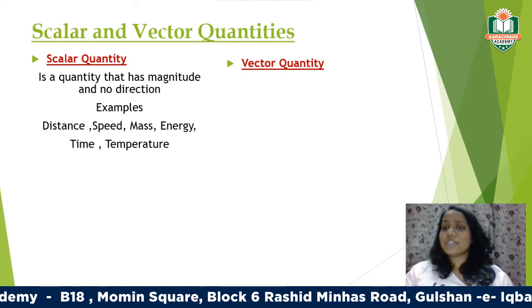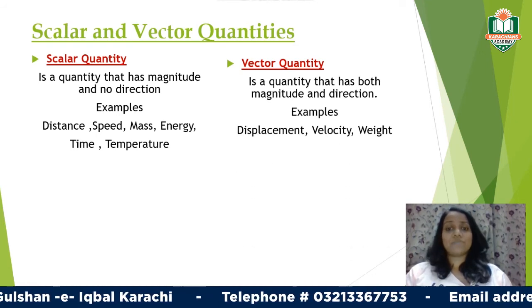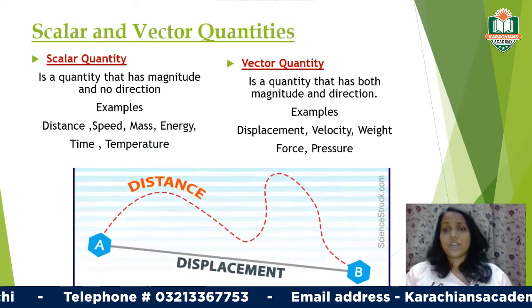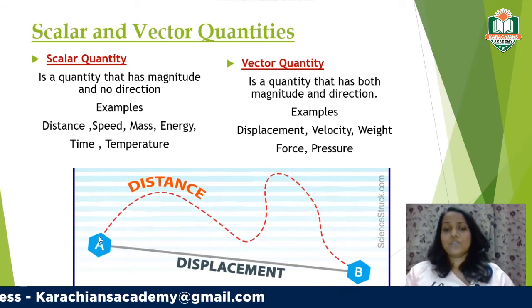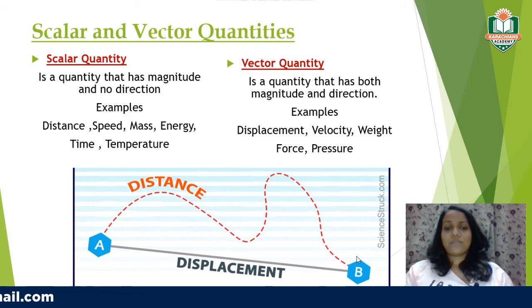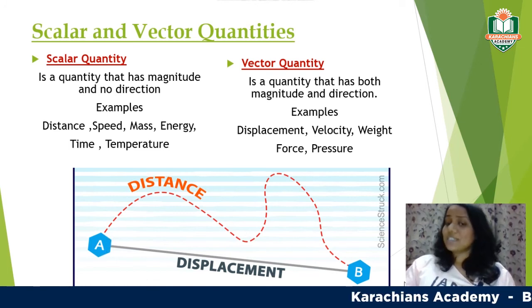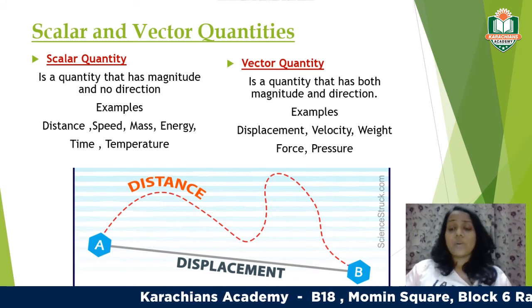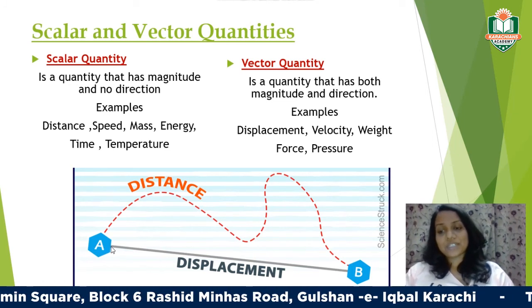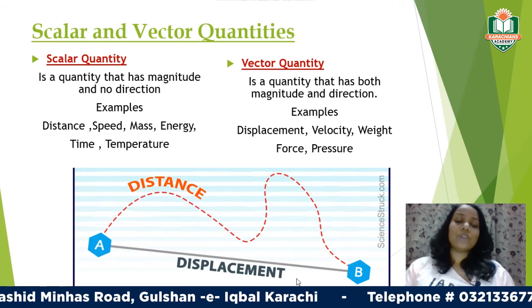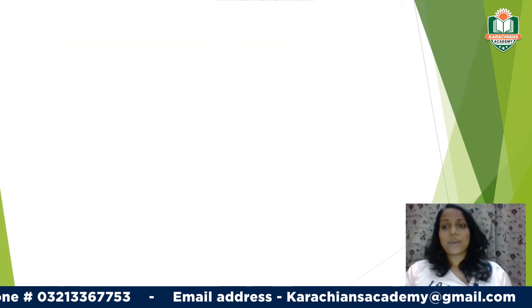A vector quantity has both magnitude and direction. Examples include displacement, velocity, weight, force, and pressure. For instance, if a person walks from point A to point B along a zigzag red dotted path, the distance is scalar — it doesn't tell us the direction. But displacement is the straight-line distance from A to B, shown with an arrow indicating direction. So distance is scalar and displacement is a vector quantity.